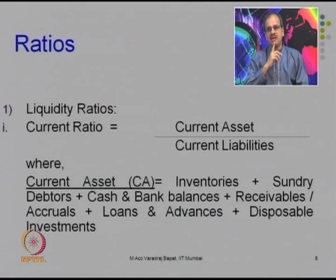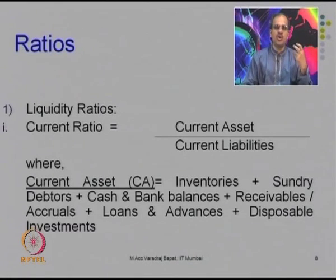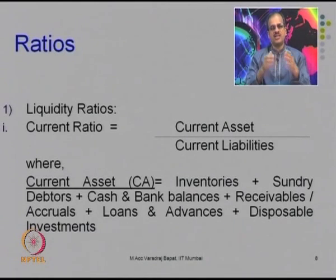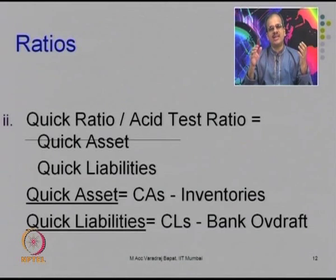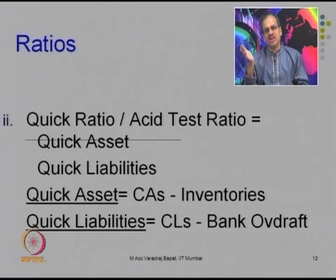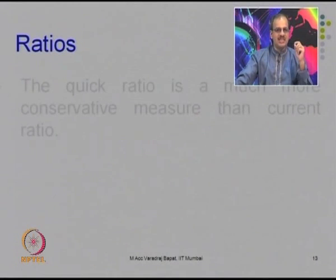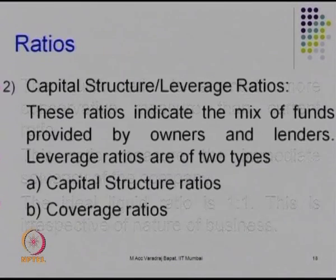One of the most important liquidity ratios is the current ratio, which is the relationship between current assets and current liabilities. This ratio helps you find out whether the company has enough current assets to pay its current liabilities. There is another important ratio known as the quick ratio, or acid test ratio, sometimes also called the liquid ratio, which is a more specific measure that tries to assess whether the company has enough money to pay its day-to-day liabilities.